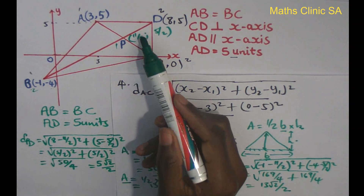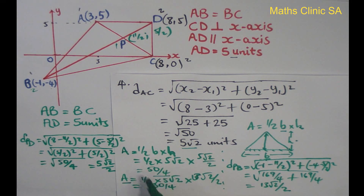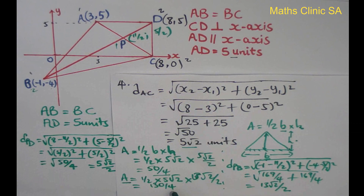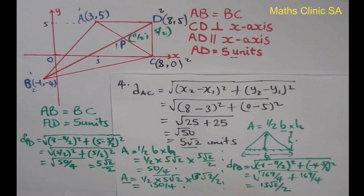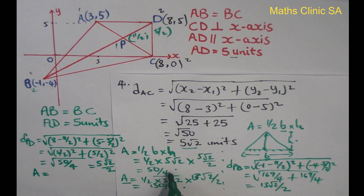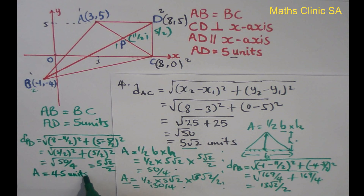To get the overall area, we add the two triangles together: 50 over 4 plus 130 over 4 equals 180 over 4. Dividing 180 by 4 gives 45. Therefore the total area of ADCB is 45 square units.